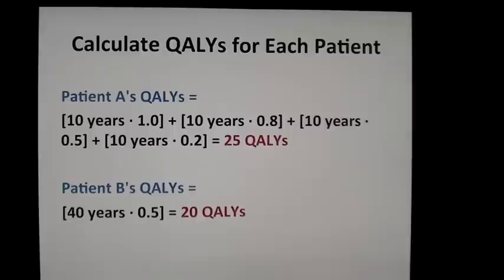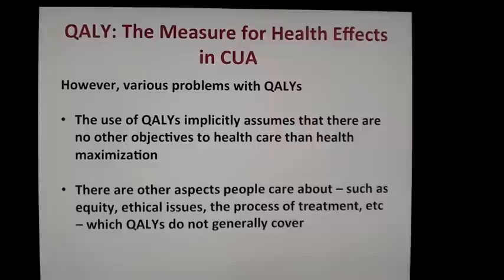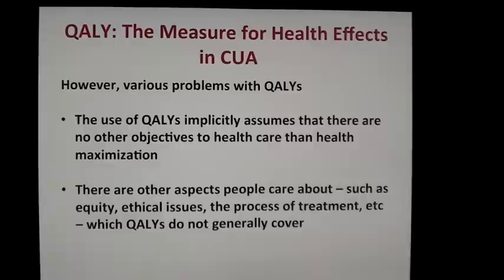These quality-adjusted life years have the benefit of being able to calculate a common metric with all of the benefits and risks amalgamated into one type of unit. Because of that, we're able to compare incremental cost-utility ratios across different programs, even if they don't have the same natural units as benefits. That's really an advantage in a healthcare system when we want to maximize outcomes. However, they do have their problems. One key problem is that there are other aspects that people care about that are not captured in a QALY.